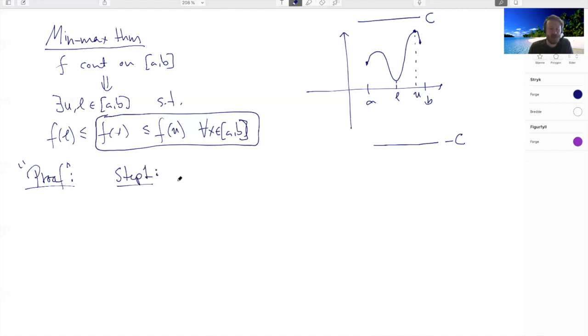So step one is to consider the set of values that the function takes, so the set M of f(x) where x is in [a,b]. What we can notice here is that this set M has upper bound. So this means by the completeness axiom that M has least upper bound. Let's call it L.